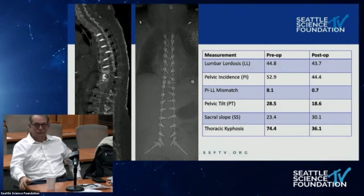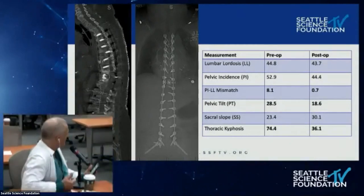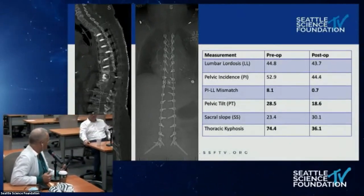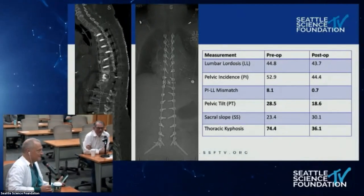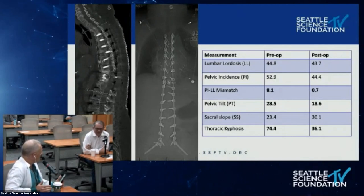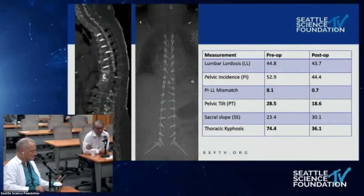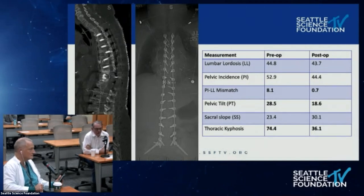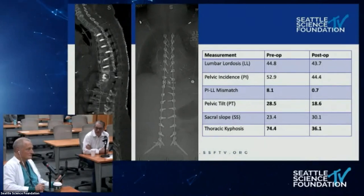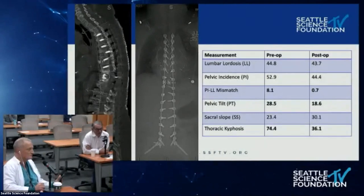Chapman asks which material is most notch sensitive when bending rods. Hart notes this is a great question — all material tests have been done with straight rods, not bent ones. When using French benders, notching is created. Titanium is very notch sensitive. There's definitely notching with any bender used. We're entering an era of patient-specific pre-contoured rods — already available, recently added to contract at their institution — which are contoured without notching.